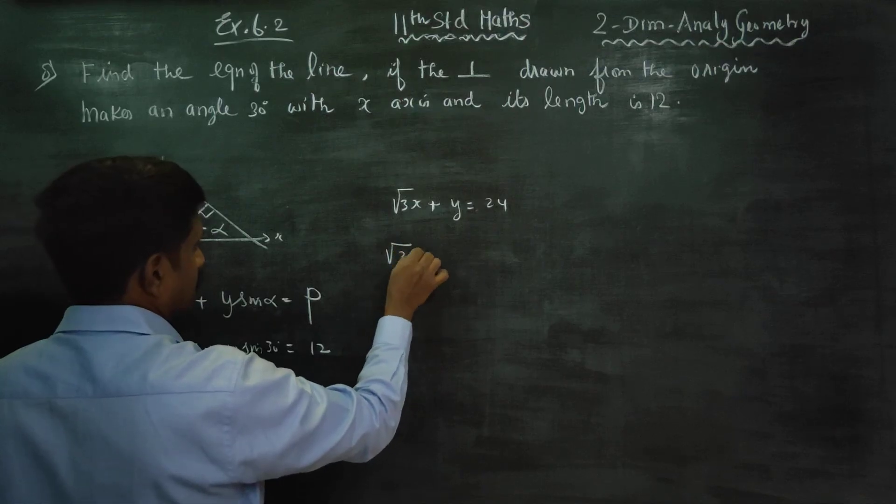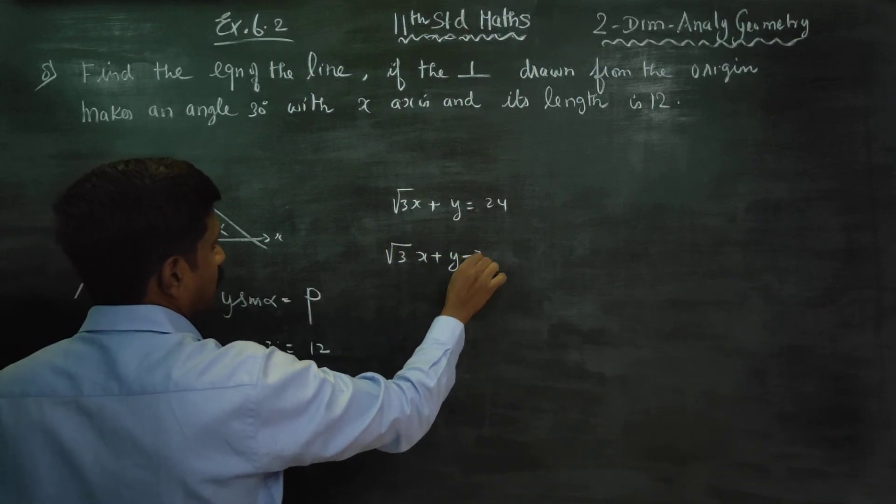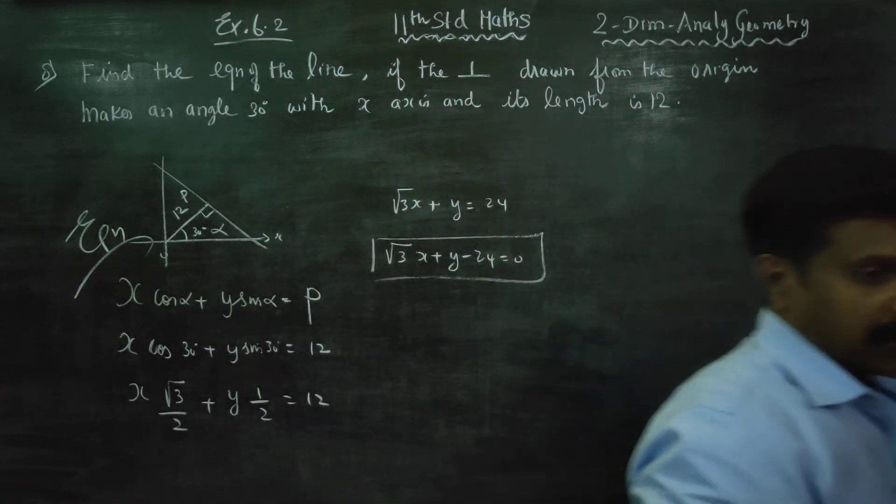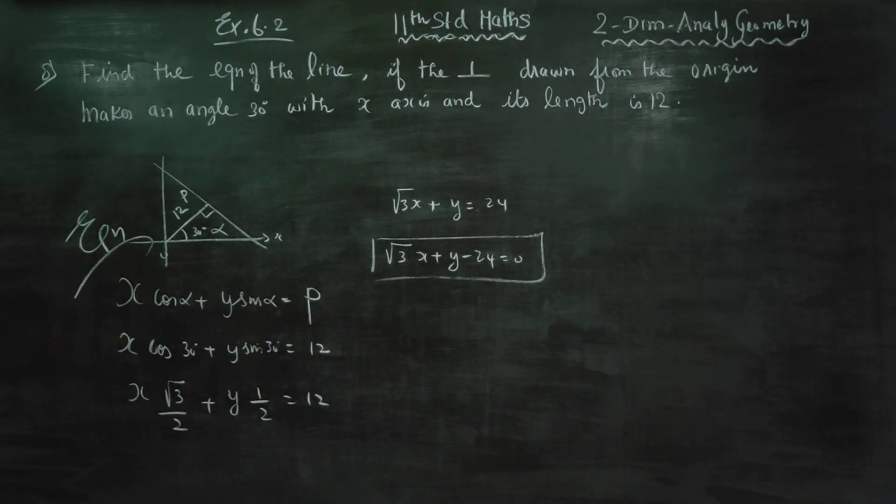When I am going to tell you, root 3x plus y minus 24 is equal to 0 is the equation of straight line. Thank you.